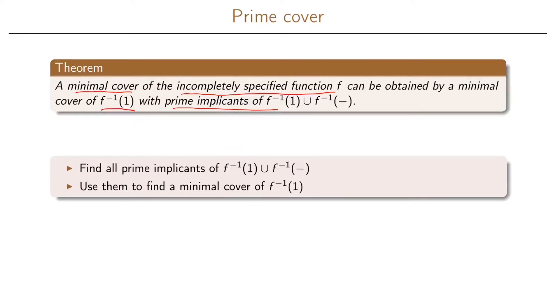So what we're going to do in order to find our prime and minimal cover is to first find all the prime implicants of the union of the onset and the don't care set. Then we're going to use these prime implicants to find a minimal cover of the onset. So then we will find a cover that is both minimal and prime at the same time, which is our ultimate goal.